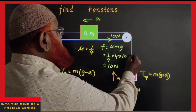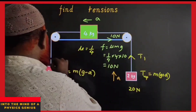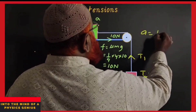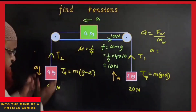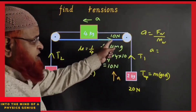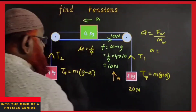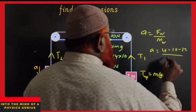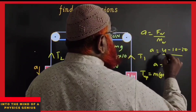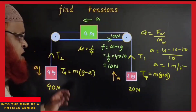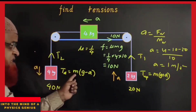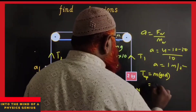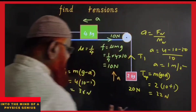In this case we need to find tensions T1 and T2. First find acceleration: net force is 40 newtons acting downwards with friction μmg = 10 newtons on the horizontal block. Acceleration = (40 − 10 − 10 − 20) / (2+4+4) = 10/10 = 1 m/s². For T1, the block comes down so T1 = m(g−a) = 4×(10−1) = 36 newtons. T2 = 2×(10+1) = 22 newtons (block going up).